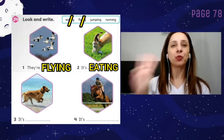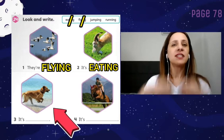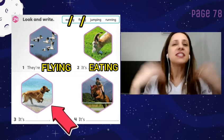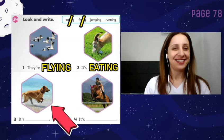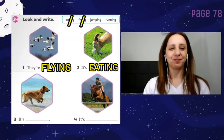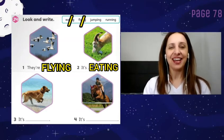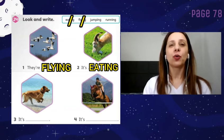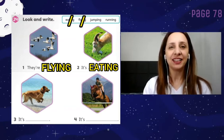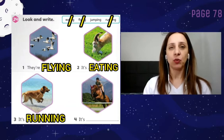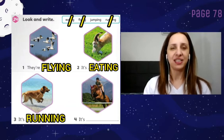Number 3. What's the dog doing? What's the dog doing? Let's think. Okay, the dog is running. Running. Write the word running on the line.